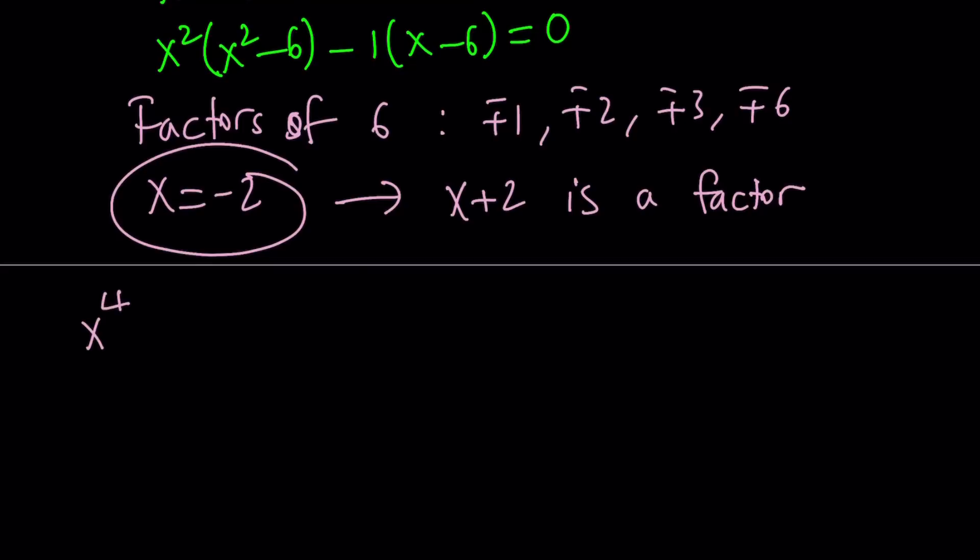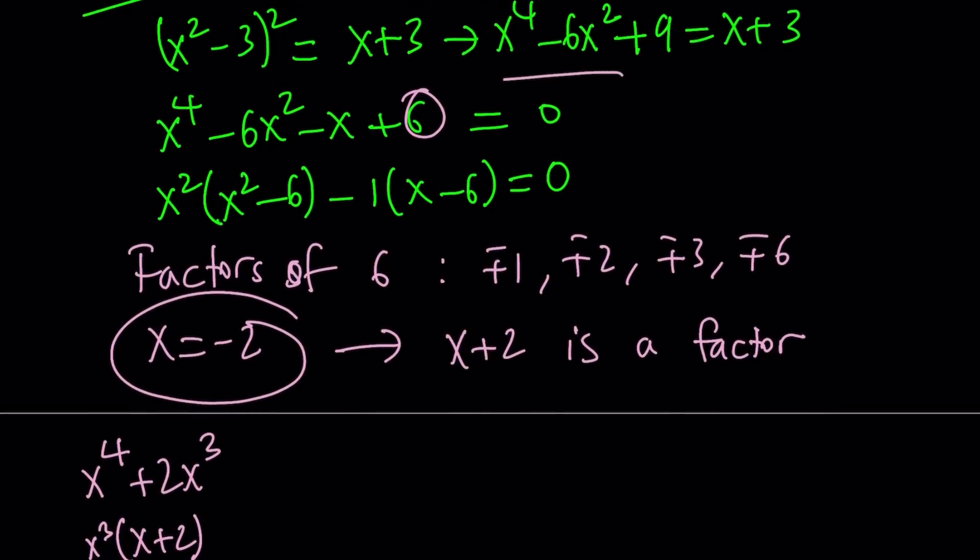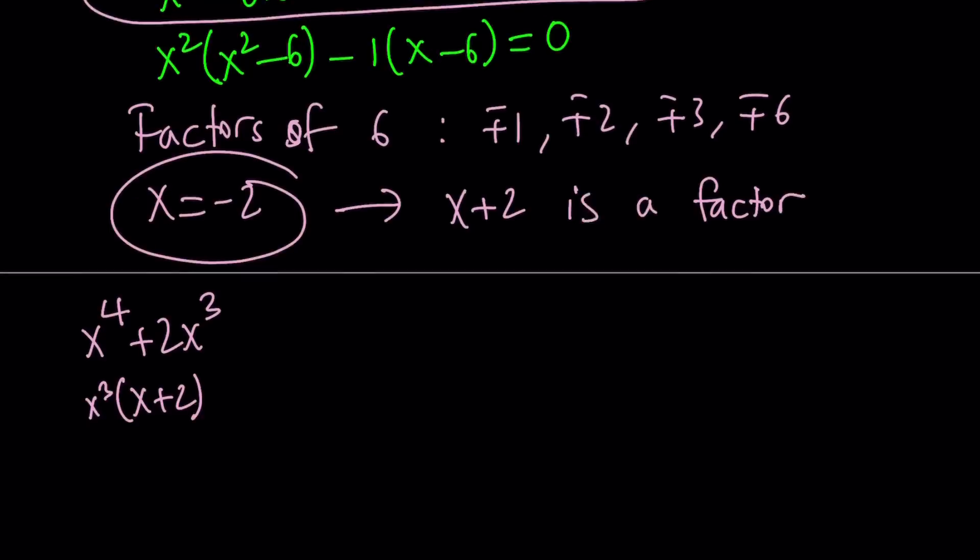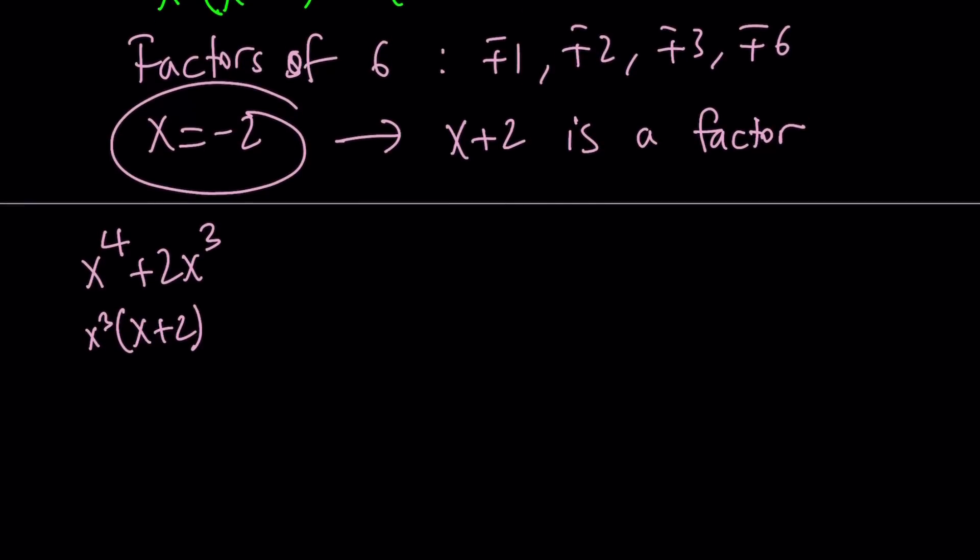And we can arrange the terms so that x plus 2 is always a factor. So like this. Start with x to the 4th. And then add 2x cubed to it. And the reasoning behind this is if you take out an x cubed, you're going to get x plus 2. So we know x plus 2 is going to be a factor. But you don't have x cubed in the original equation. So I'm talking about the quartic. So what can I do? I can just eliminate it. So add, subtract, add, subtract, so on and so forth. Subtract 2x cubed. Now it's balanced.